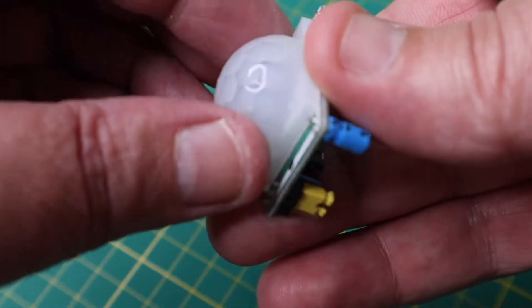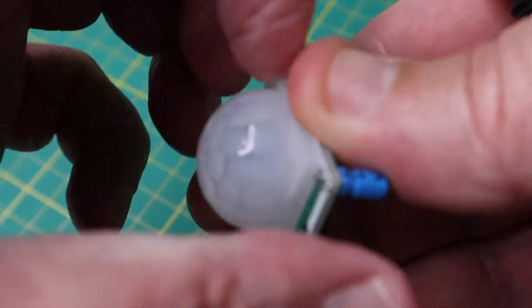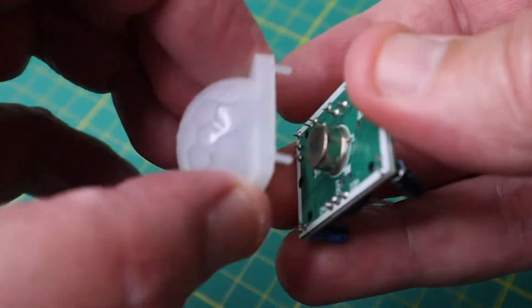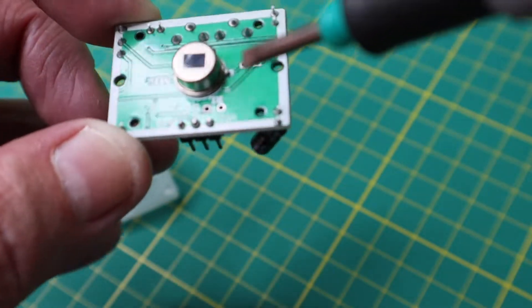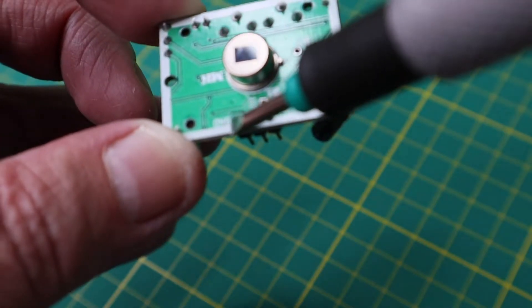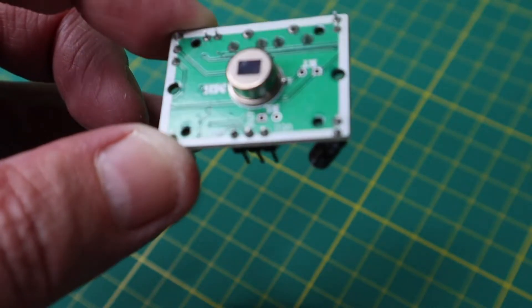On my PIR, the labels for the three pins were hidden underneath this little plastic dome. If we take that off, I can see here VCC, ground, and out right here.